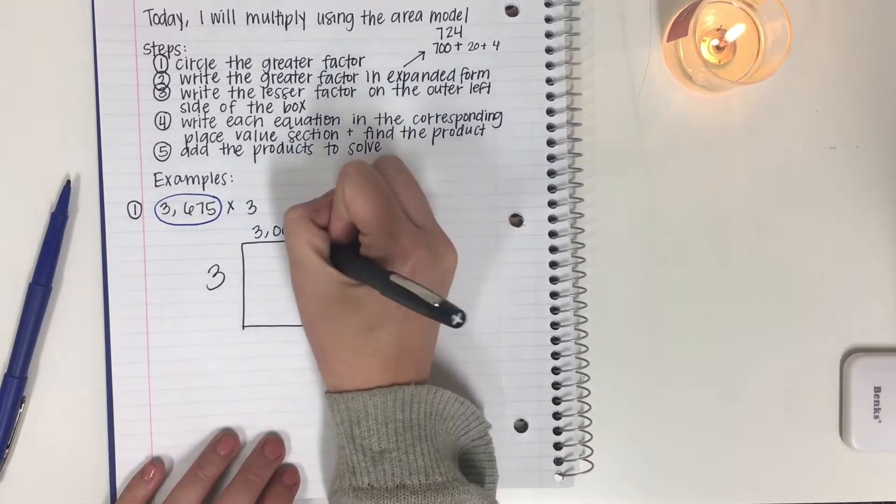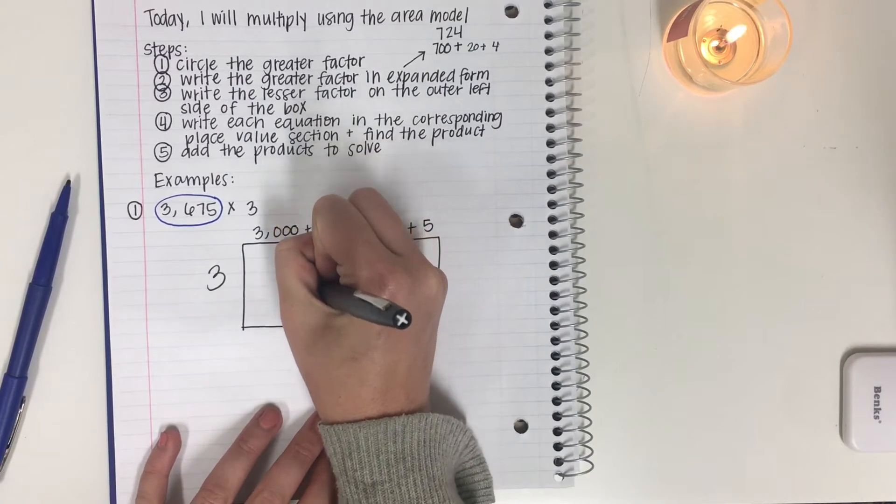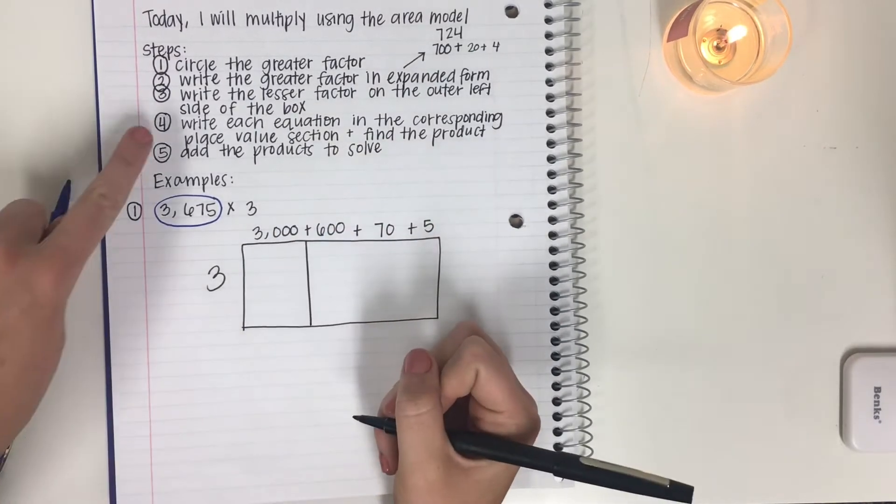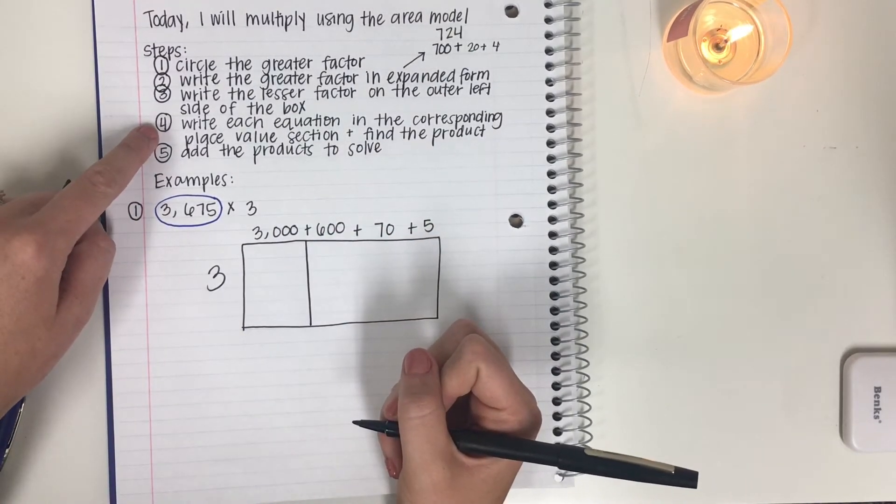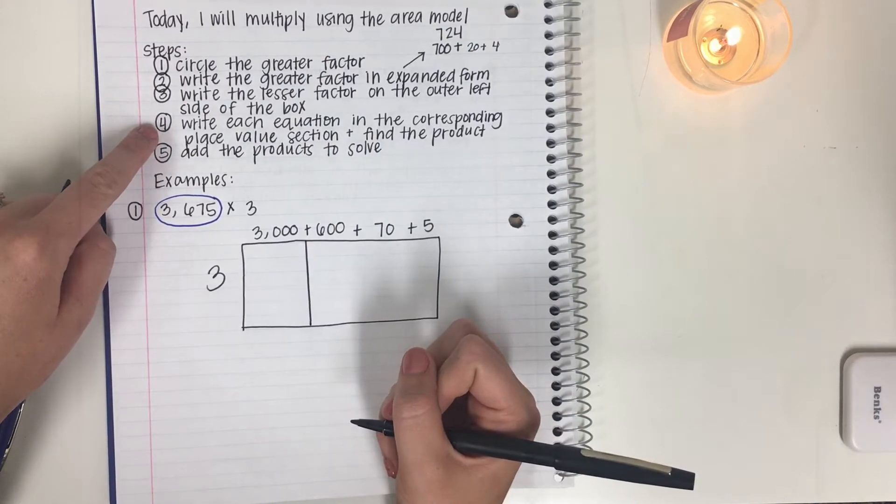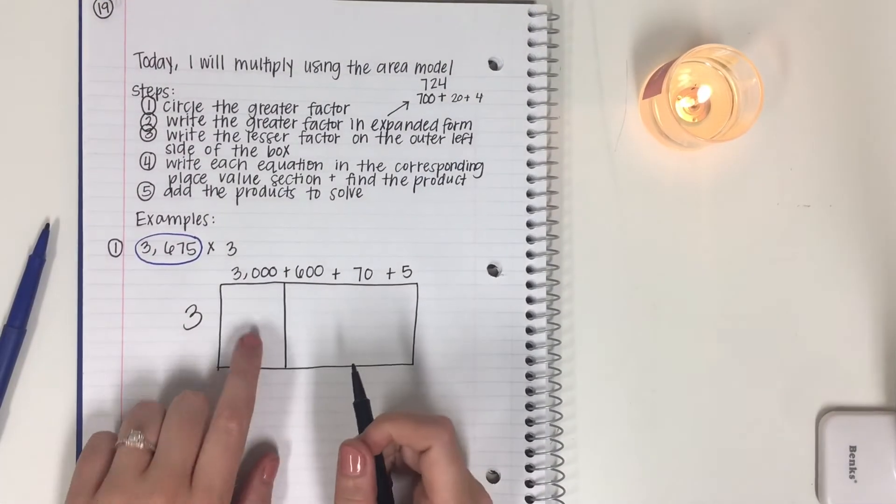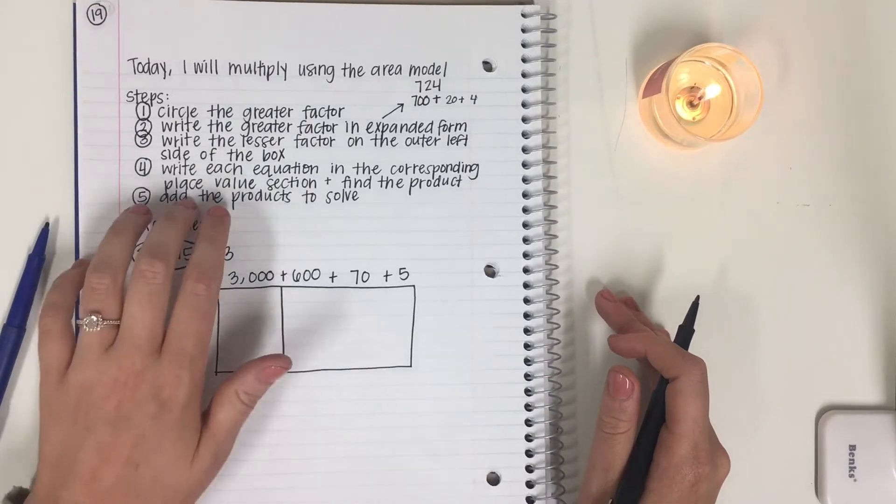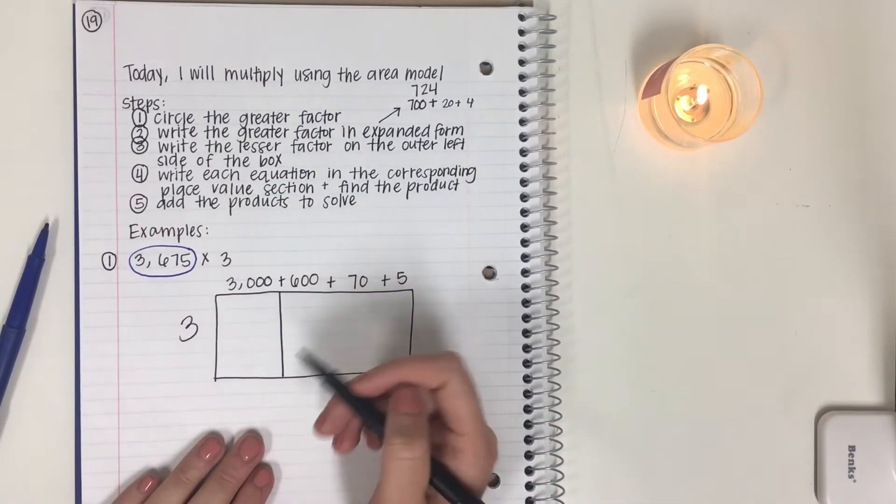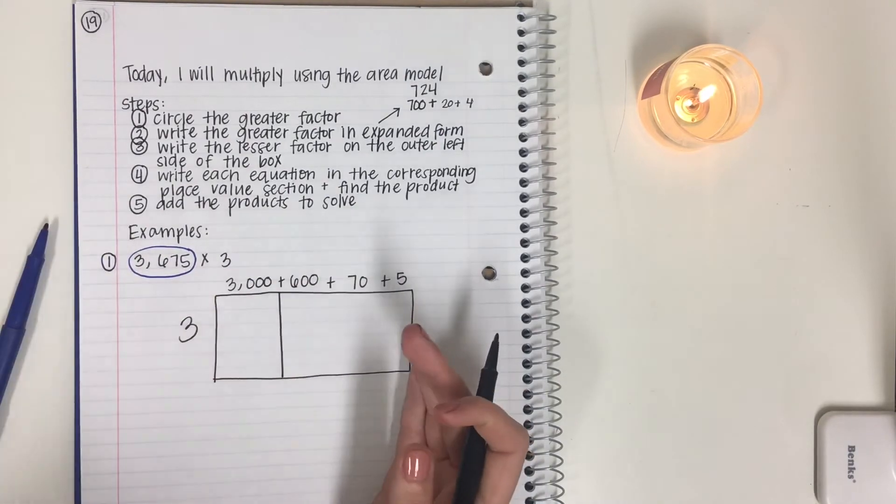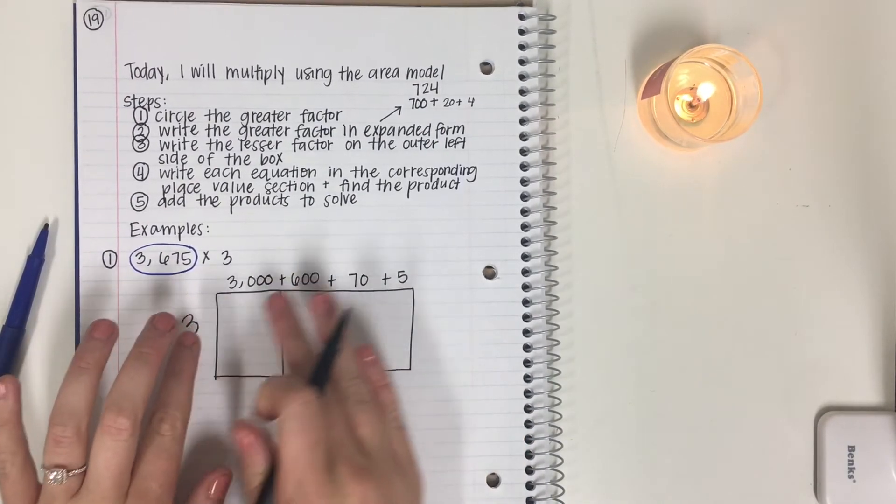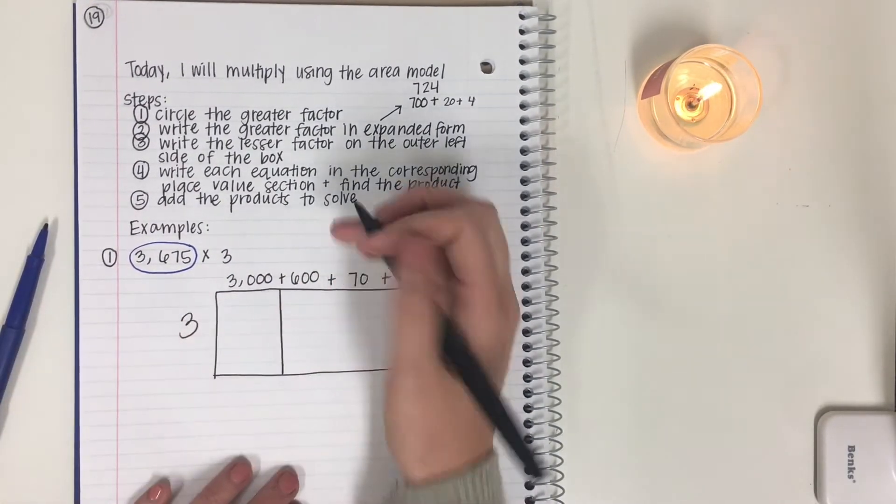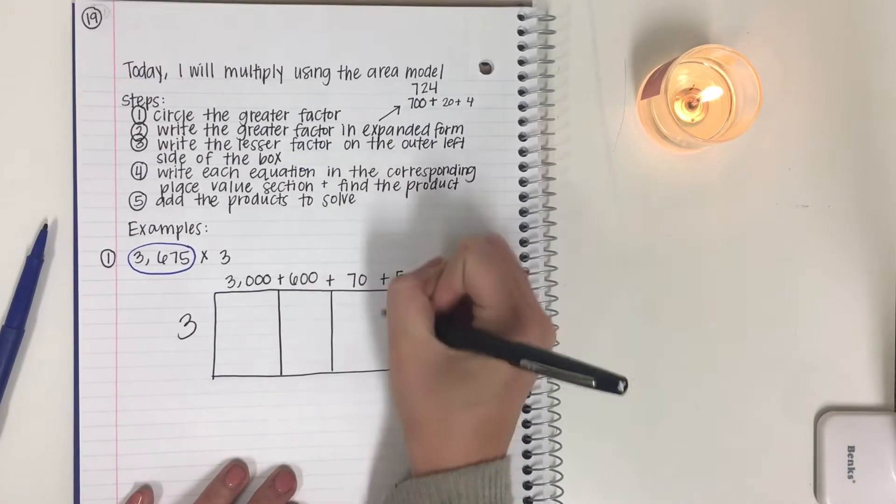Now, we need to draw lines to make sections. For step four, where it says write each equation in the corresponding place value section, this is our section. We just made the place value section. So that's what it means by a place value section. It just means drawing that line and creating a section for yourself visually so that you can multiply each value separately. So we're going to make our sections for step four.